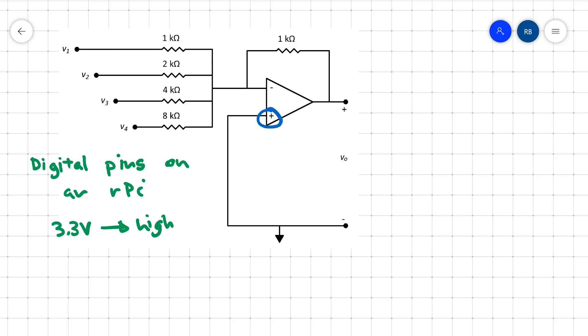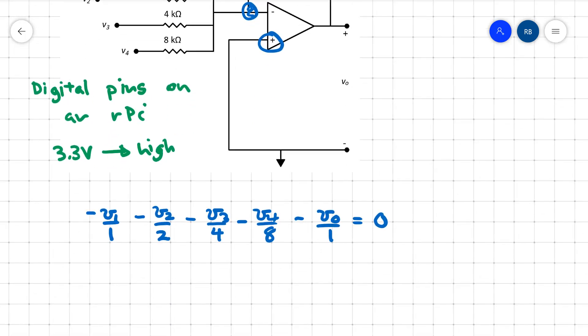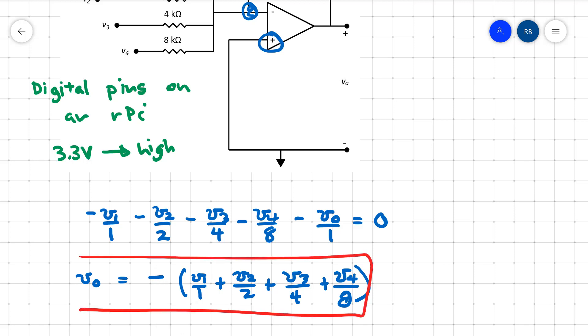Let's solve this operational amplifier circuit to figure out what the output will be. I have VP equals ground, and so VN is equal to ground. When I do a current balance at this node here, I get minus V1 over 1 minus V2 over 2 minus V3 over 4 minus V4 over 8 equals minus V0 over 1 is equal to 0. If I solve for V0, I find that V0 equals negative V1 over 1 plus V2 over 2 plus V3 over 4 plus V4 over 8. This is my generic op-amp equation.